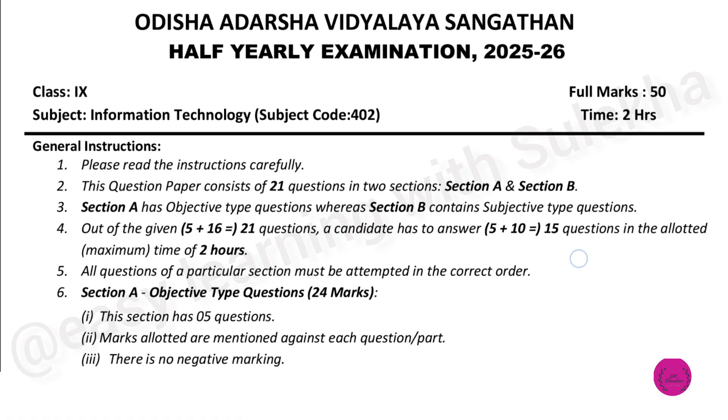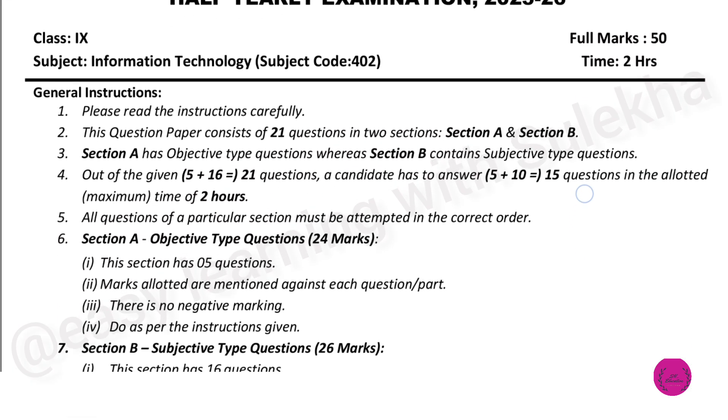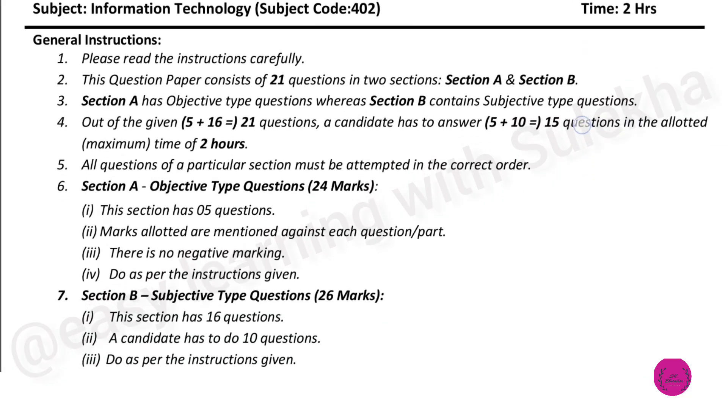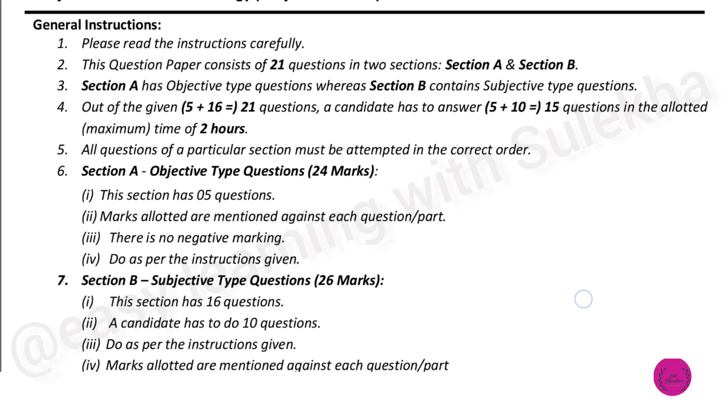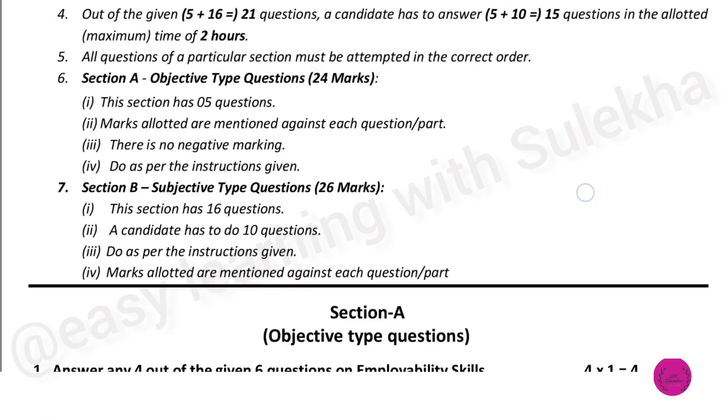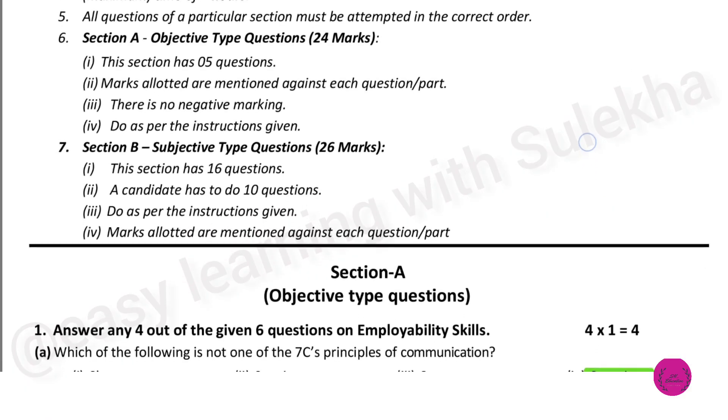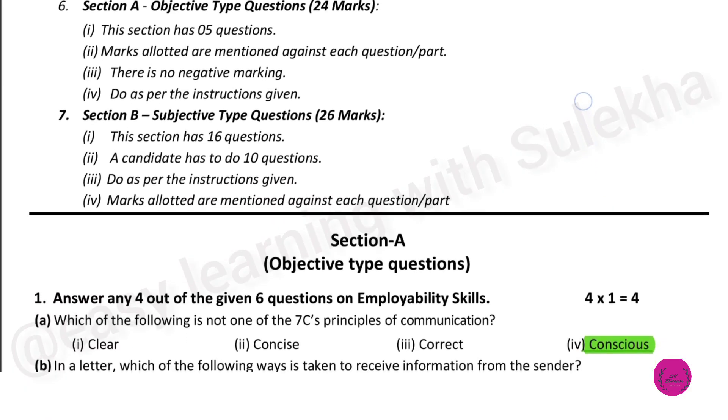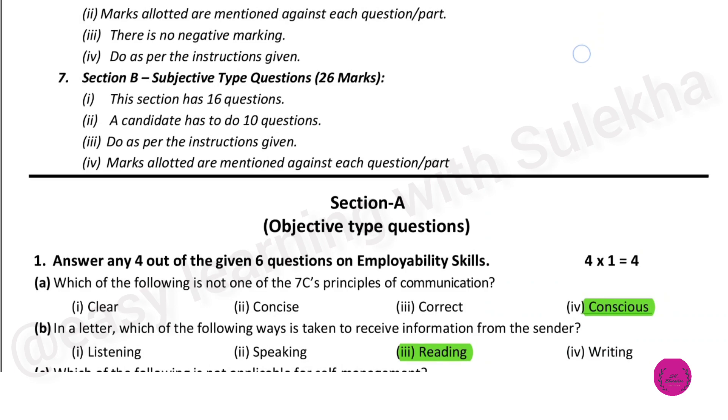This question paper consists of two sections: Section A and Section B, where Section A consists of multiple choice questions and Section B contains subjective type questions. So let's start with Section A.